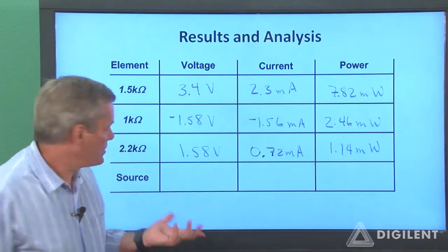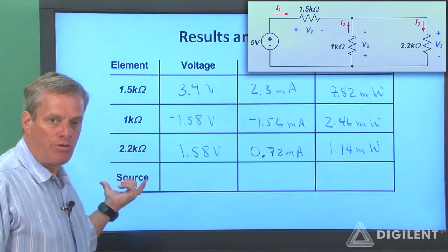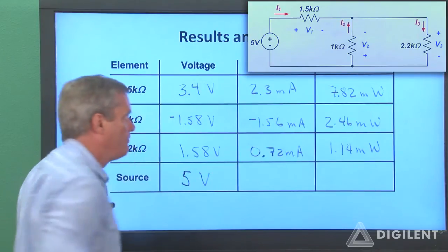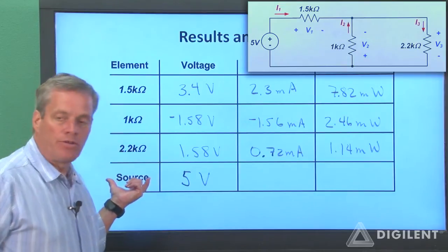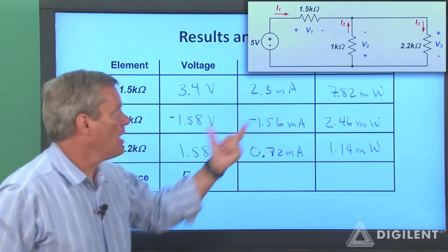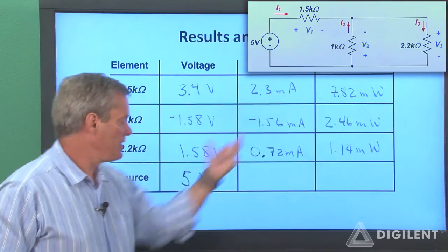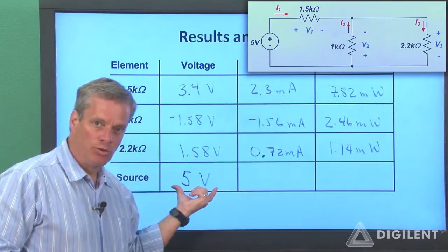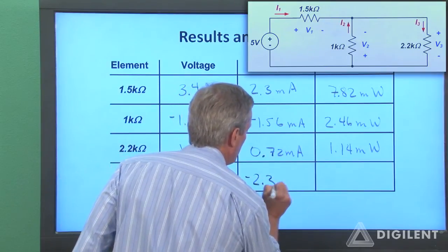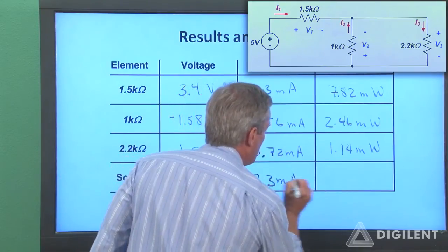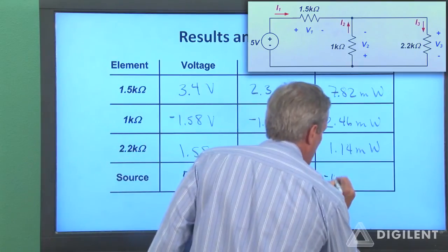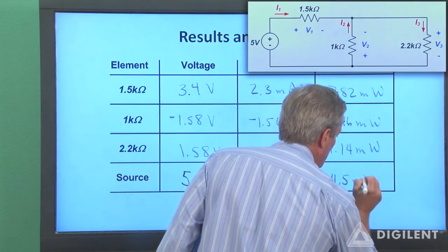Now if we want to check conservation of power, we need to determine the current through the source. The voltage of the source is 5 volts. The current through the source is the same as the current through the 1.5 kiloohm resistor. However, this current is now entering the negative voltage terminal of the source. I need to change the sign on one or the other. I'll change it on the current. If I multiply these two together now, I get a negative 11.5 milliwatts.